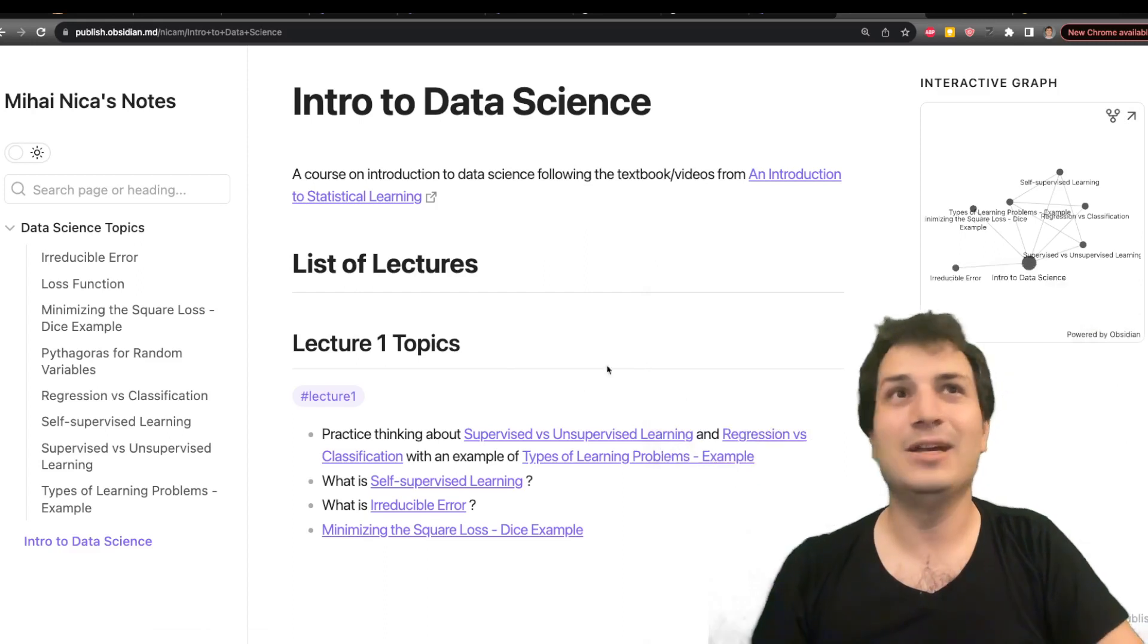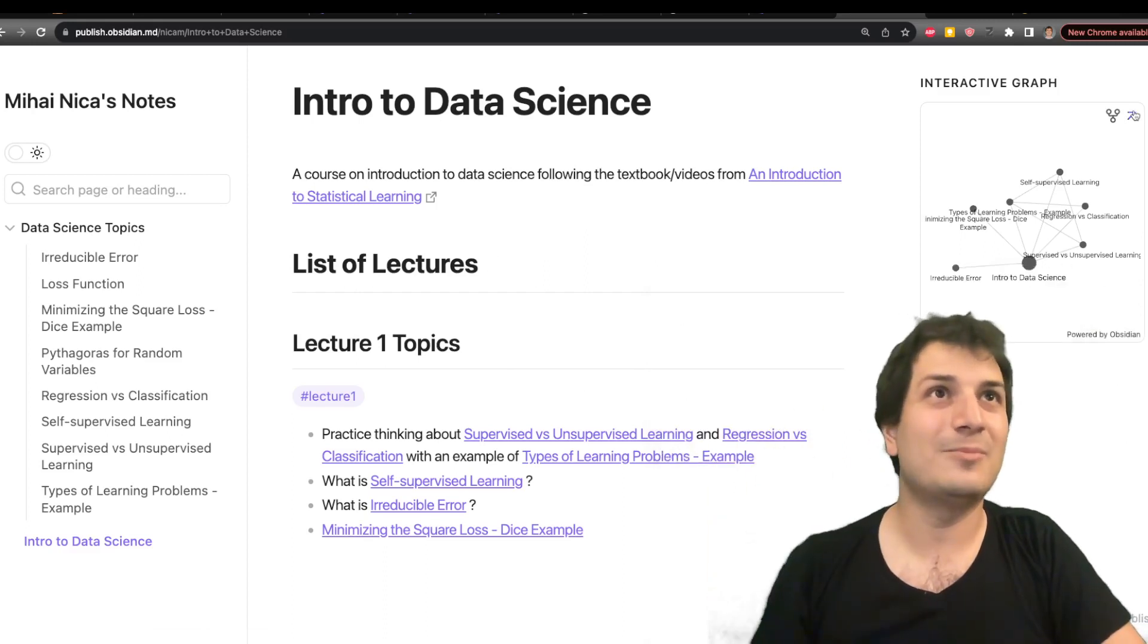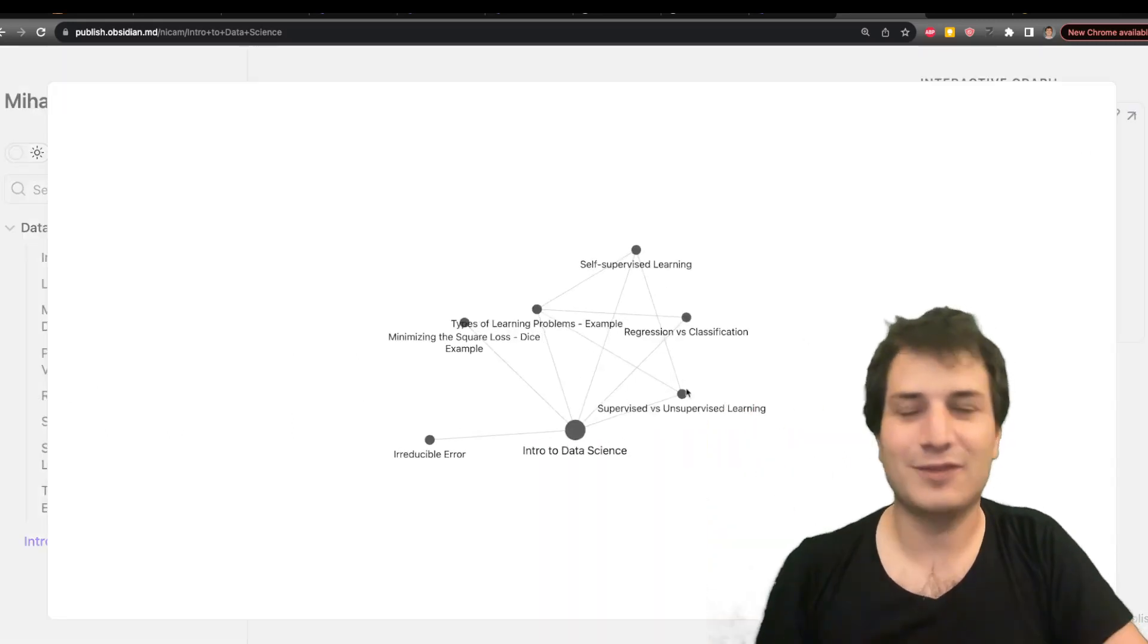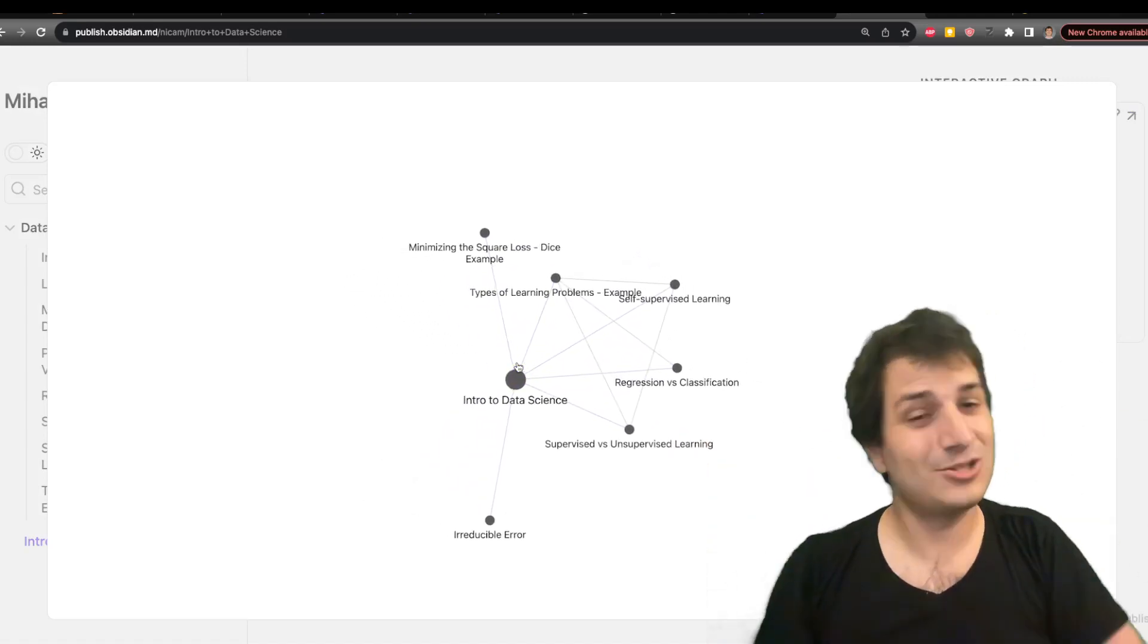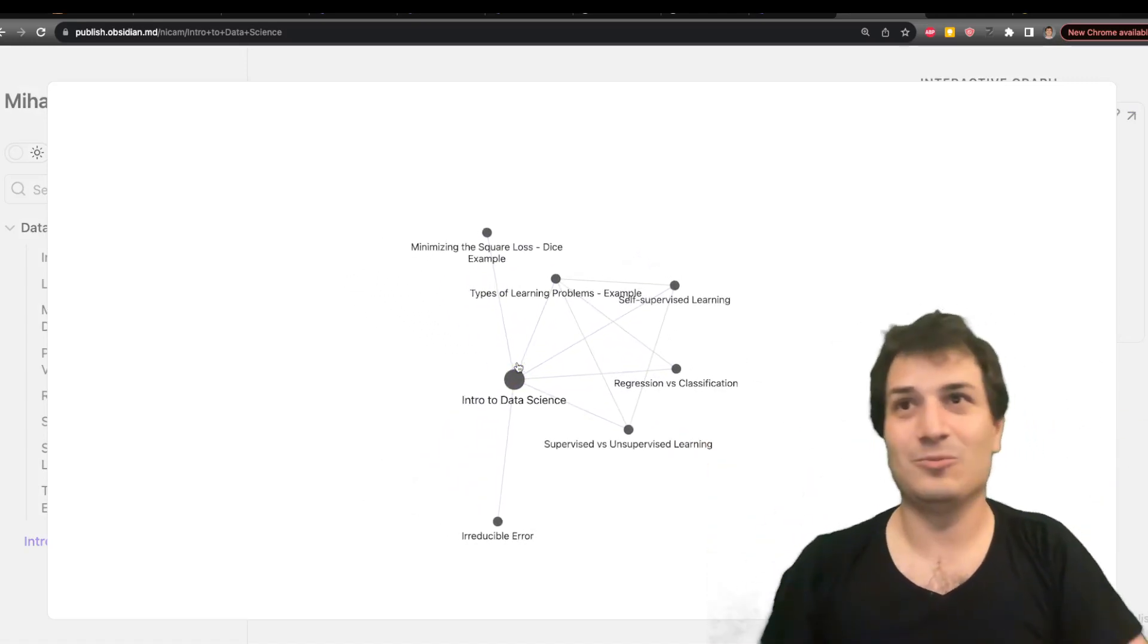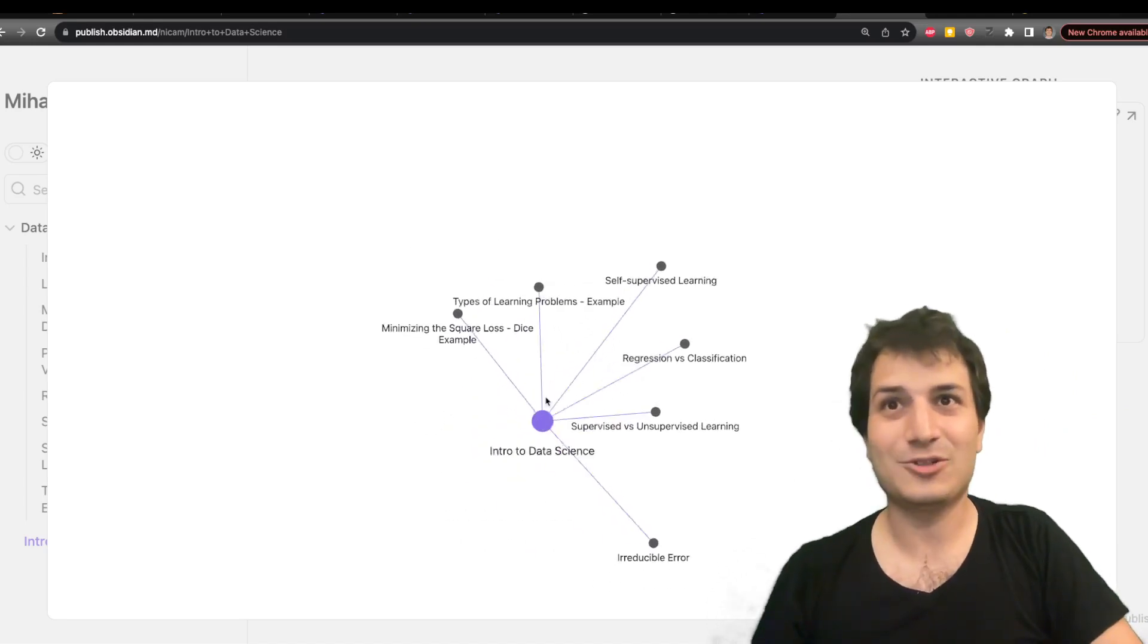And I hope to update this as we go in the course. Another cool thing about Obsidian is it makes this graph of all the different topics. There's not that many right now but as the course progresses it should fill up with lots more topics. So that should be fun.